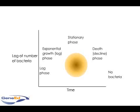Bacteria introduced into an environment abundant in needed resources grow in a specific manner. Initially, individual bacteria are still maturing and are not yet able to divide. This is termed the lag phase and can last from hours to days. During this time, bacteria are producing whatever proteins are necessary to live within the new environment.